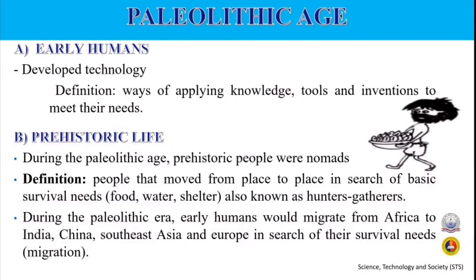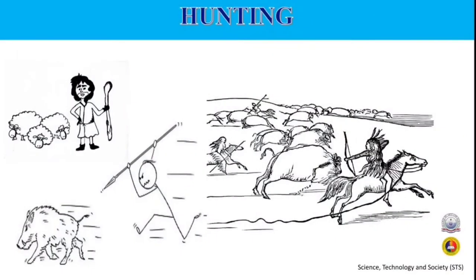During the Paleolithic age, prehistoric people were nomads — people that moved from place to place in search of basic survival needs like food, water, and shelter — also known as hunter-gatherers. During the Paleolithic era, early humans would migrate from Africa to India, China, Southeast Asia, and Europe in search of survival needs, a process we call migration. Hunting was their primary way of gathering food.